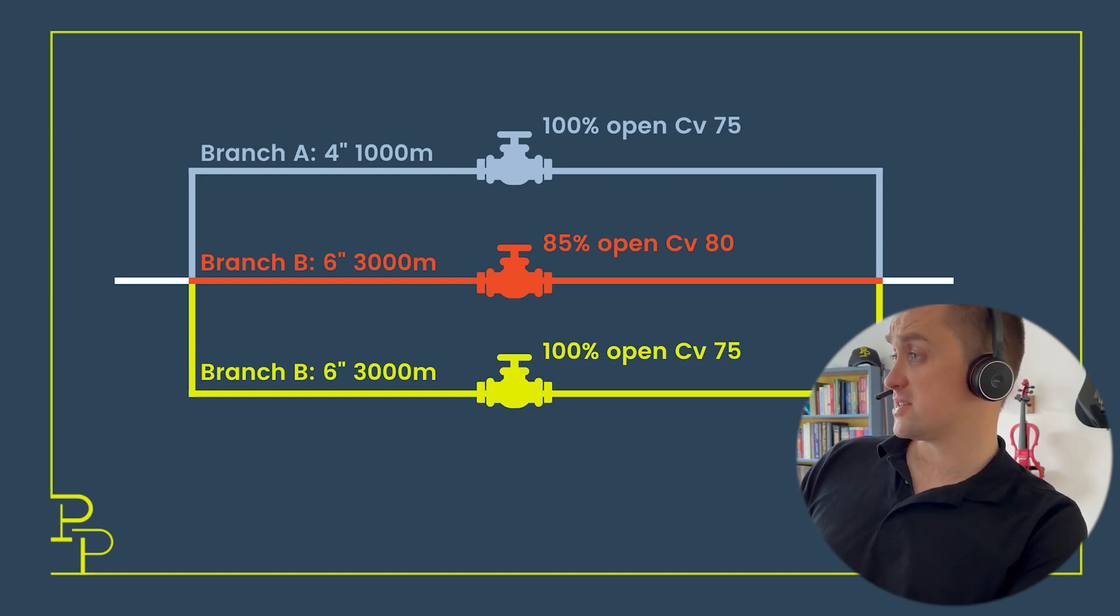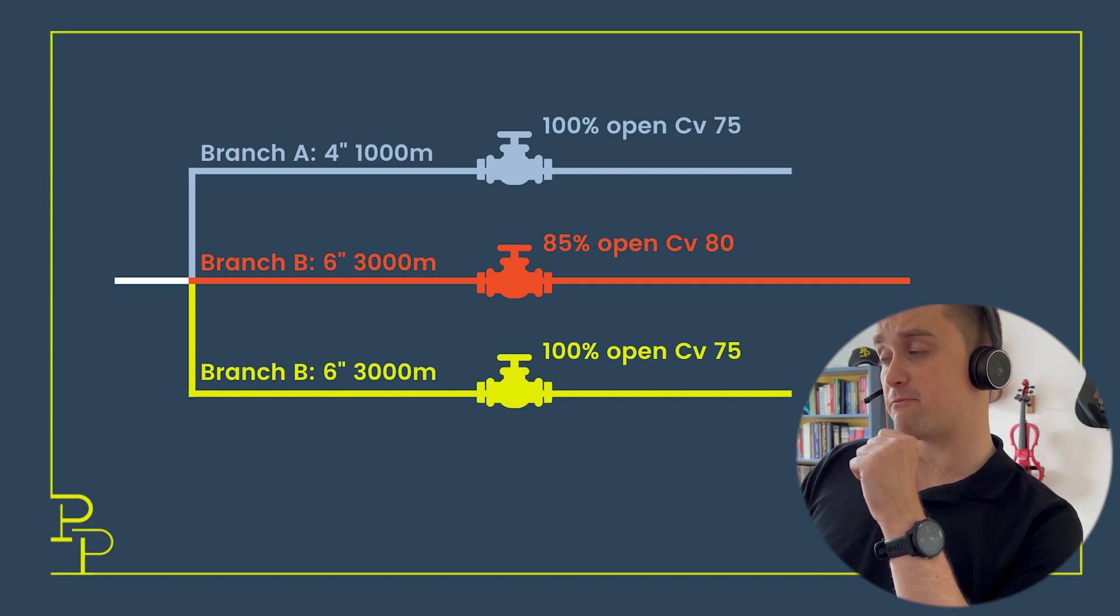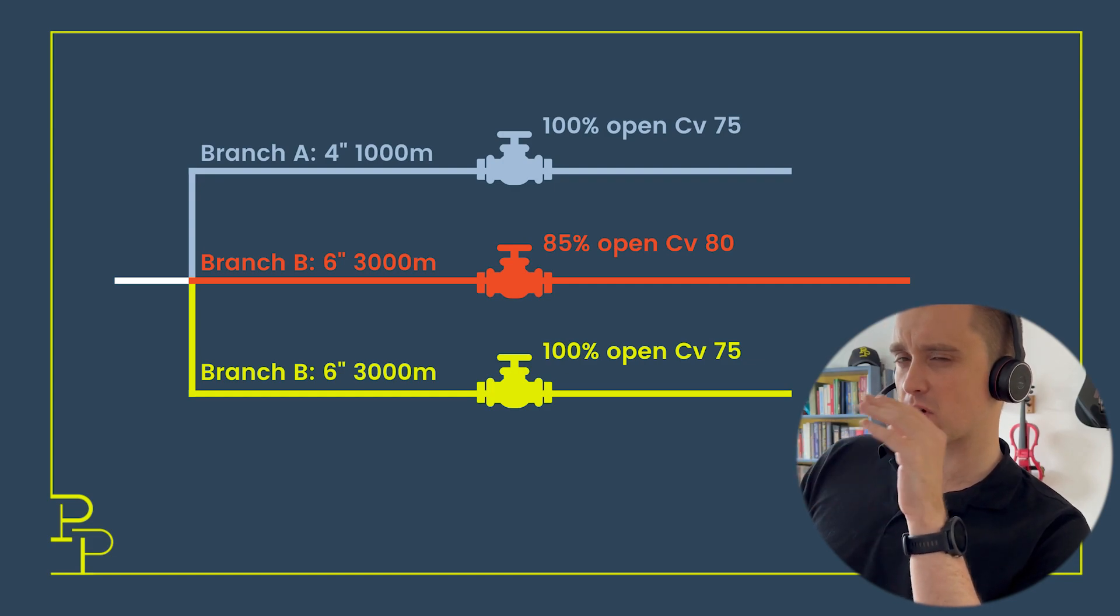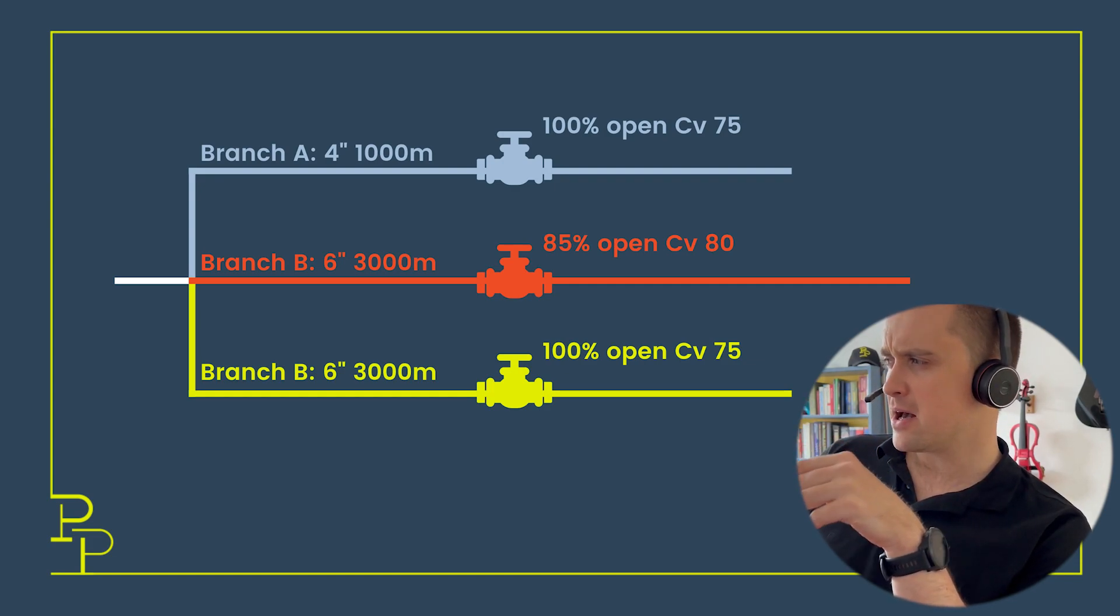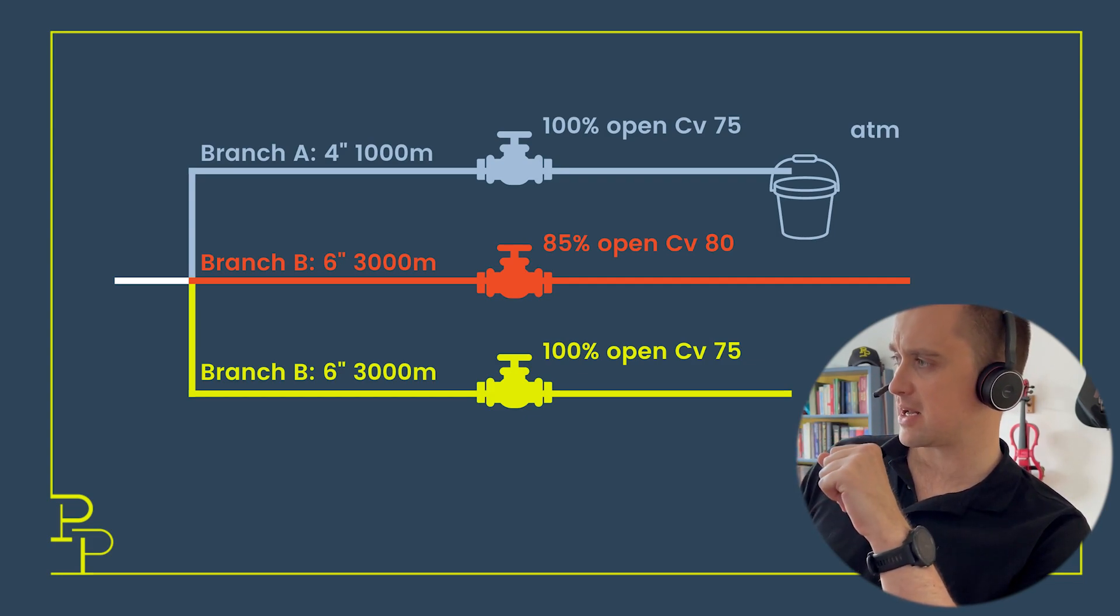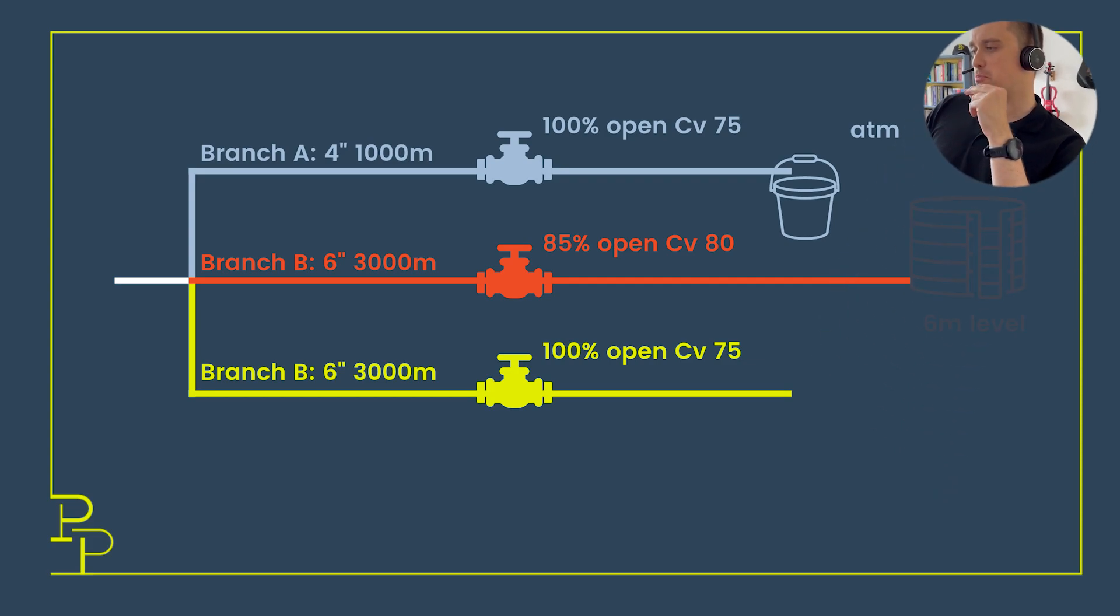These are the three parallel branches we looked at last time. You can see they originate at the same point and then converge again to a common point. Now we're going to split them up. We're going to keep the lengths and valves identical, but we're going to terminate them differently. Branch A will terminate to atmosphere—I'm collecting the stuff in a bucket. Branch B will go into the base of a tank that has six meters head in it. We're just pumping water at ambient temperatures.